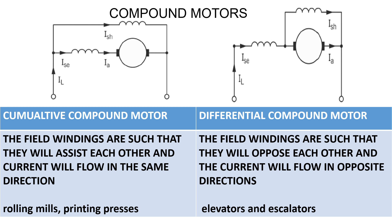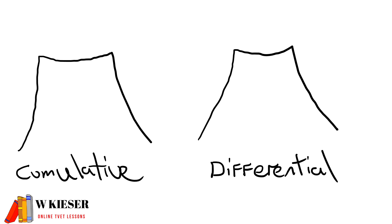Compound wound motors could either be cumulatively compounded or differentially compounded. If cumulatively compounded, the field windings assist each other and current flows in the same direction — these are used in rolling mills or printing presses. For differentially compounded motors, the field windings oppose each other and current flows in the opposite direction — these are used in elevators and escalators.